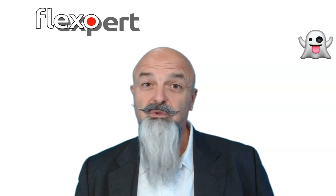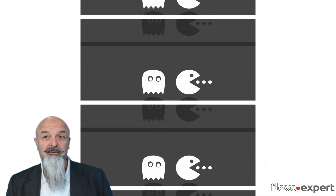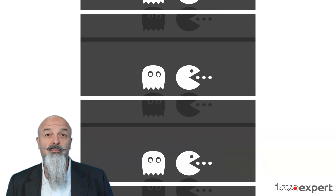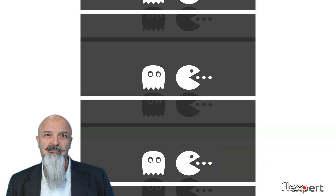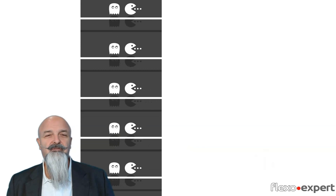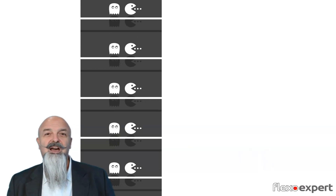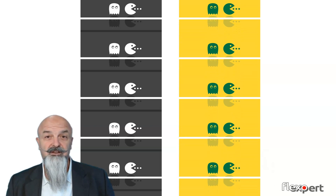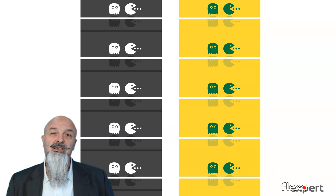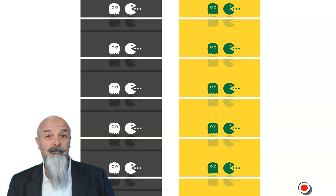Let's start from understanding what we mean by ghosting. Ghosting is described as the appearance of certain unwanted images on print. Such defective images are originated by graphic elements that are reproduced in a different position on the printing repeat. There can actually be different types of ghosting — we can have ghosting related to a single color, or ghosting generated by overprinting colors that are interfering with each other. Assuming that the inks are working at optimum viscosity and dilution, let's see what happens in both cases.